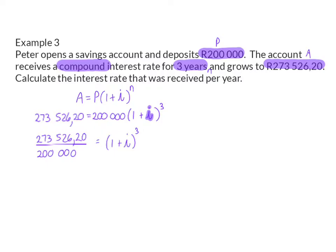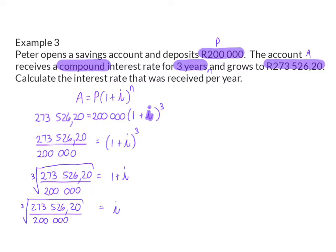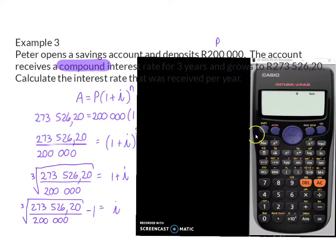And to get rid of a cube I'm going to do the inverse operation, which is a cube root. And to finally get rid of the plus one on the right, I'm going to take the left hand side and subtract one.